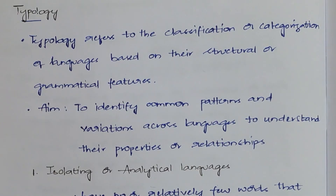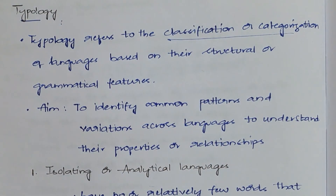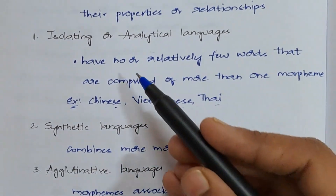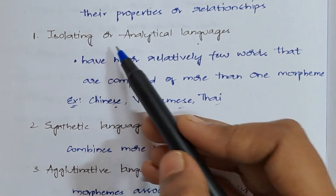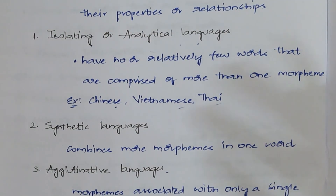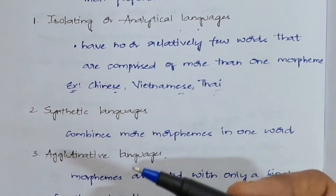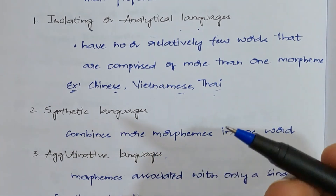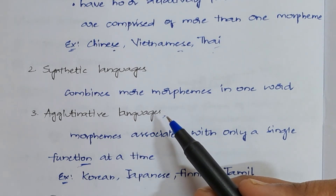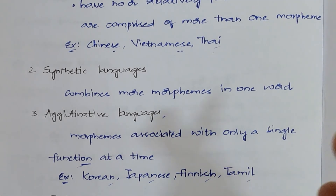The fourth component is typology. Typology is the classification and categorization of languages based on their structure or grammatical features. There are different kinds: isolating or analytical languages have words formed by very few morphemes — examples are Chinese, Vietnamese, and Thai. Synthetic languages are the opposite, having many words formed by more than one morpheme. Agglutinative languages use complex words to express simple topics — examples include Korean, Japanese, Finnish, and Tamil.